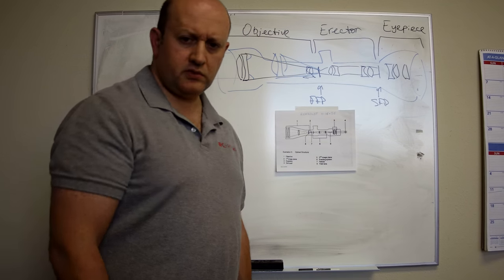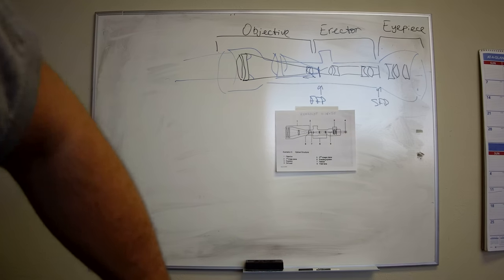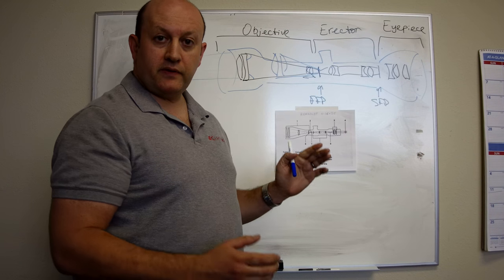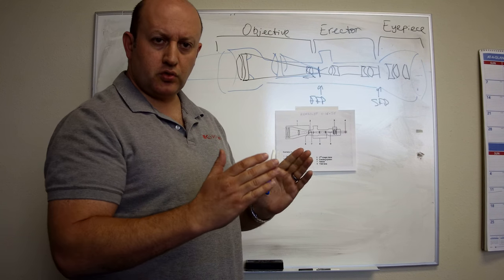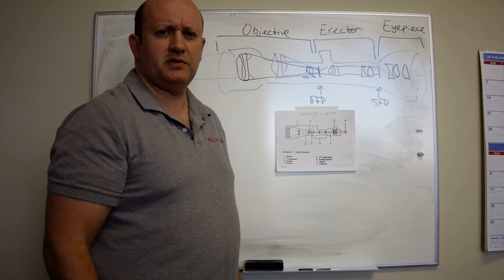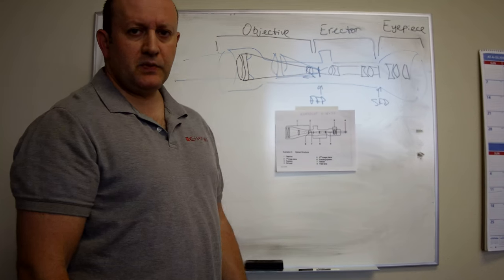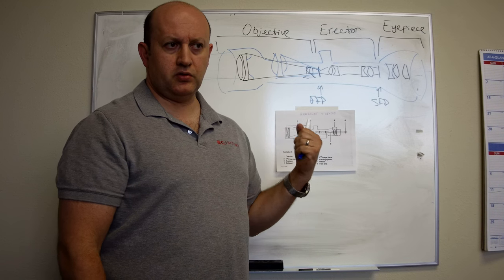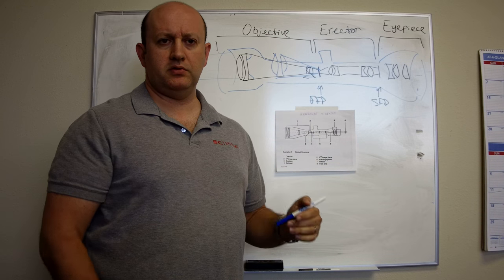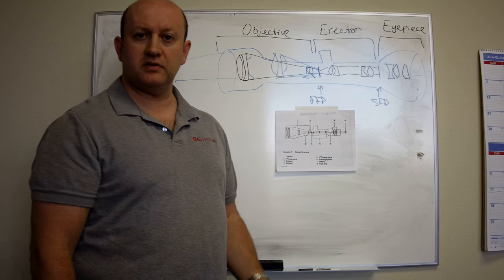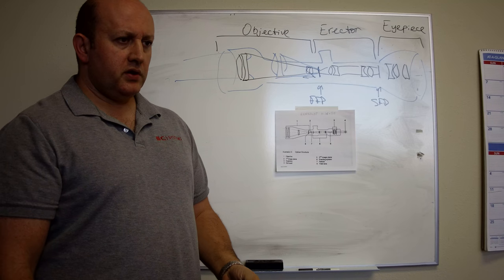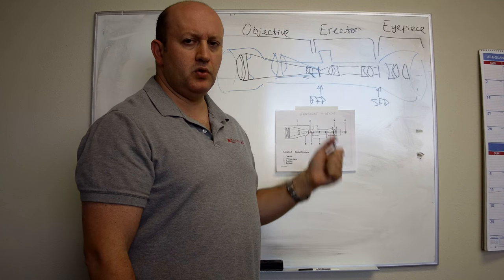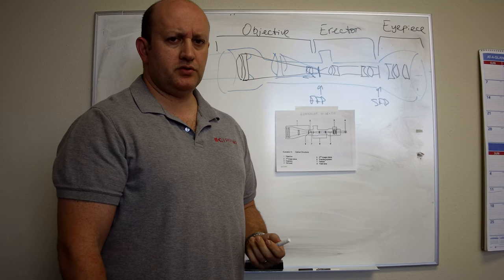We've got an exponential increase in the number of optical elements. In this typical scope I counted, I counted nine elements thereabouts. In the Hensoldt, I've got eight in the objective lens system, I've got a reticle, let's say nine, five in the erector, fourteen, and four in the eyepiece. So I've got a total of eighteen optical elements. March scopes have even more. With high erector ratios and short overall length, they have really complicated designs, a bunch of elements stacked up.